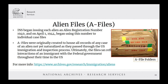A final set of records to address are alien files, more commonly called A-files. The 1940 Alien Registration Act required all immigrants residing in the U.S. to visit their local post office and register their alien status with the federal government. As part of this process, the Immigration and Naturalization Service began issuing each alien an alien registration number, and on April 1, 1944 began using this number to create individual case files. A-files were originally created to house all records of an alien not yet naturalized as they passed through the immigration and inspection process.